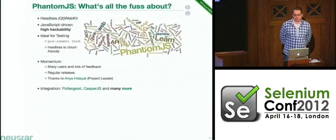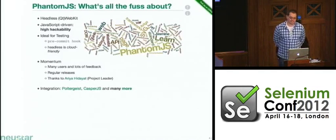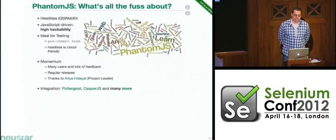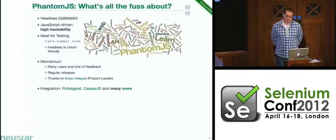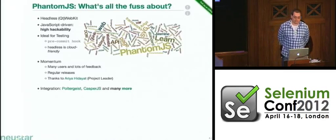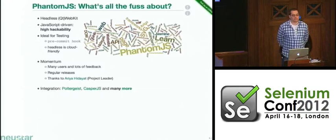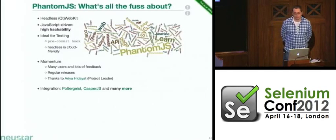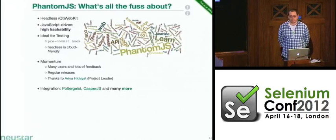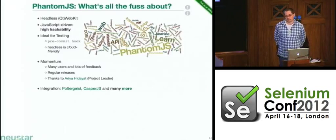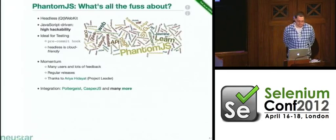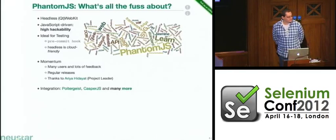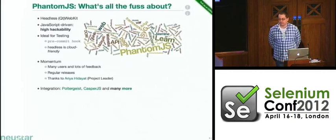So what is PhantomJS? It's a headless version of WebKit — precisely, it's based on the Qt WebKit wrapper. It's completely written in JavaScript, which makes it highly hackable. People are coming up with all sorts of scenarios on how to use it, most of the time stuff we didn't think about. It's ideal for testing because it's a very good solution if you want to add it to your pre-commit hooks — Git supports pre-commit hooks, though not SVN as far as I know.